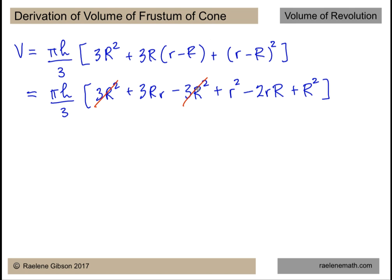3r² minus 3R² cancel. These terms here are actually the same because little times big R can commute so that we have only one of those terms remaining. And so for the three terms that we have left we have R² plus one Rr plus one r². And this is the formula for the volume of a cone.